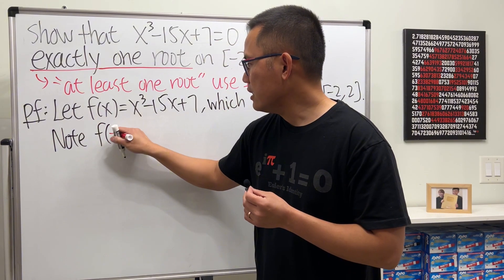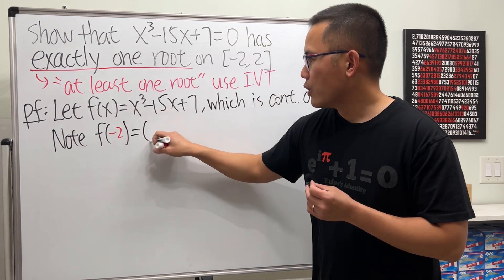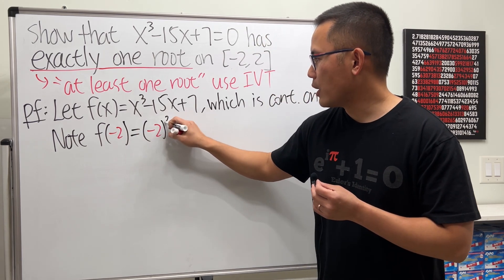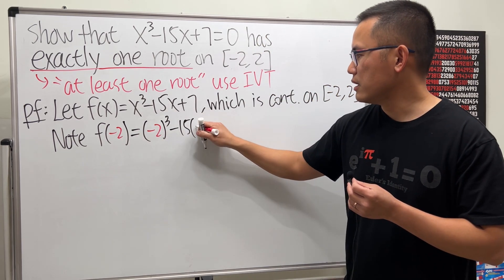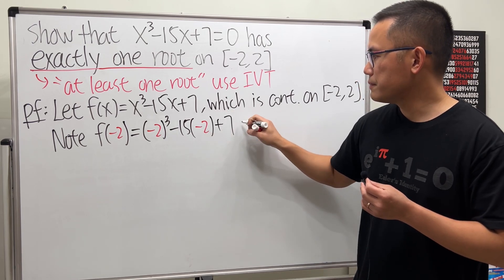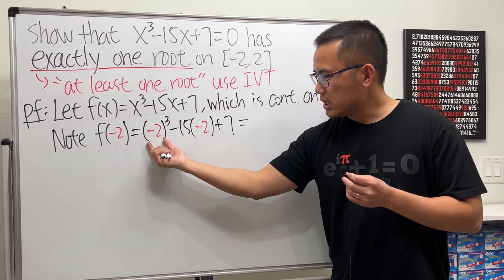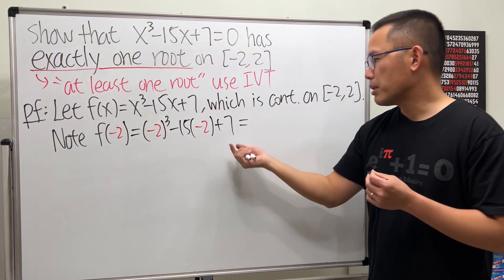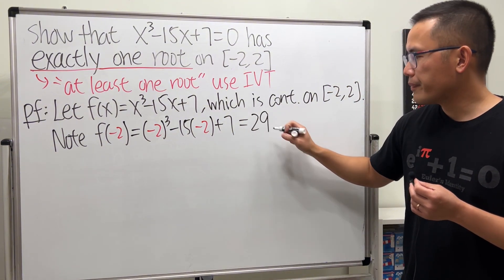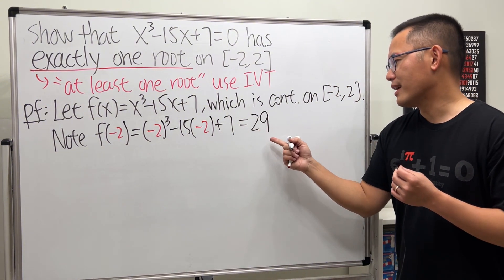f of negative 2: we have negative 2 to the third power minus 15 times negative 2 plus 7. That's negative 8 plus 30 is 22 plus 7, we get 29.